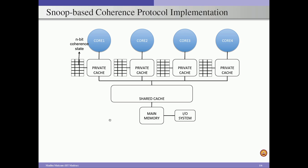In order to implement a cache coherency protocol, for each of these private caches we are going to have a separate table. This table gives state information associated with each of the blocks present in the private cache — effectively a one-on-one match between each block in the private cache and an entry in this table. Each entry provides n-bit coherence state, specifying the state in which the corresponding block is present at that particular point of time.